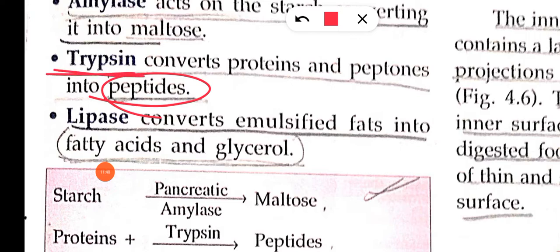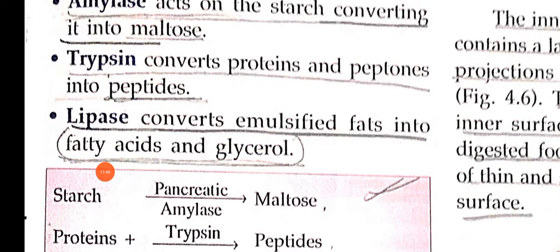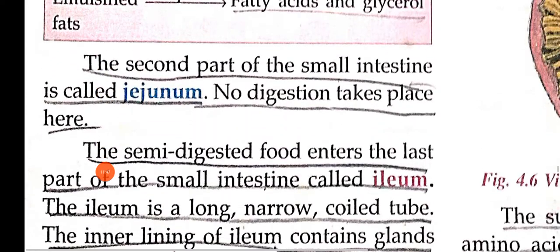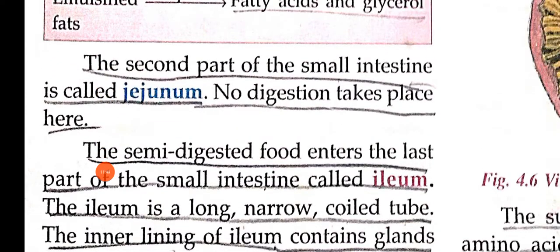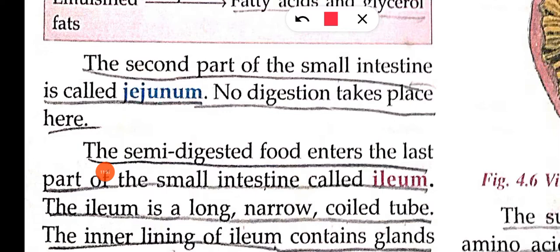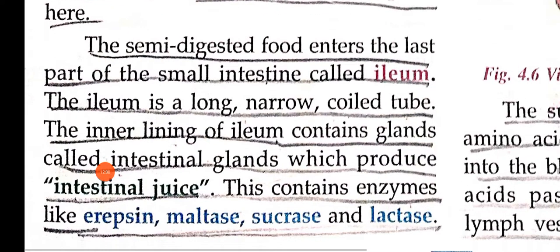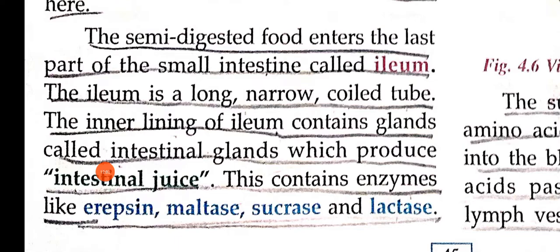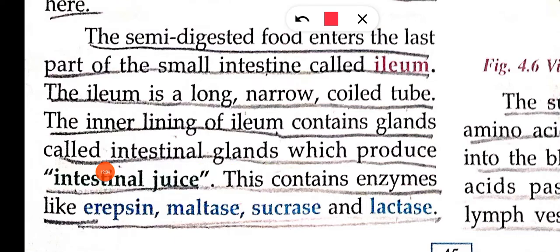So lipase converts emulsified fat into fatty acids and glycerol. The three parts of the small intestine are: duodenum, jejunum, and ileum. There is no digestion in the jejunum — the semi-digested food is transferred to the last part, the ileum.